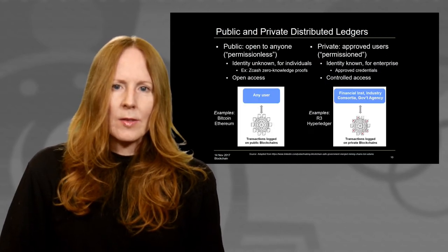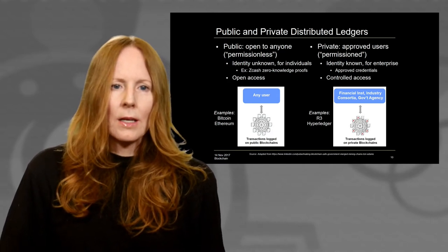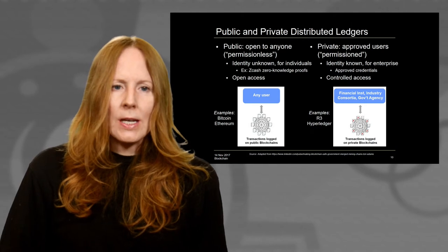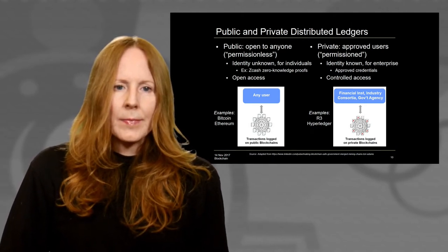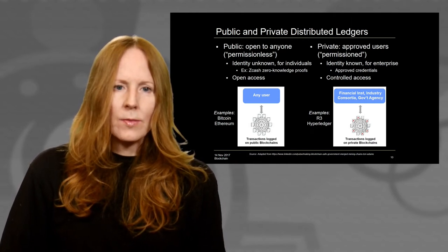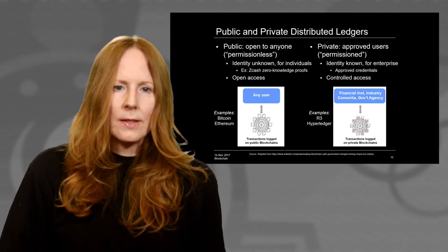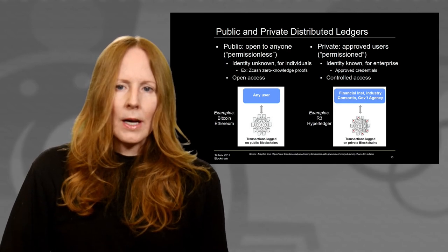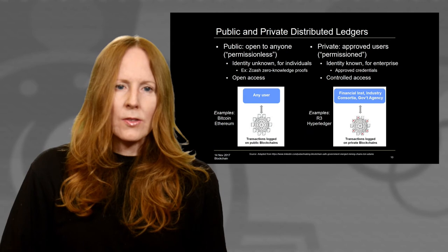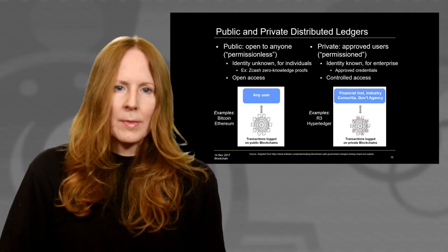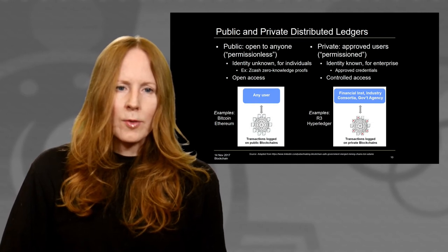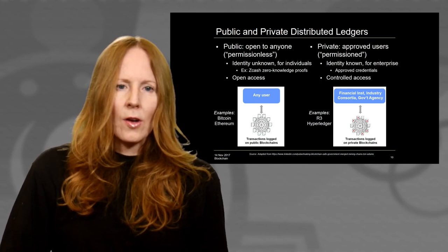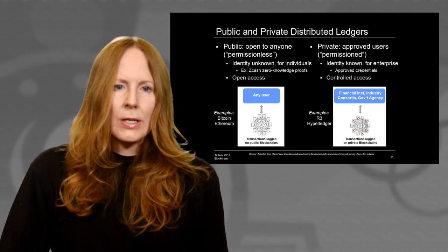There are two kinds of distributed ledgers: public and private. Public chains, like Bitcoin and Ethereum, are truly open public chains where identity is not known. Many users are preferring even higher grades of privacy, such as Zcash and Monero, and Ethereum has announced it will include zero-knowledge proofs to make its chain even more private. The other kind — enterprise or private chains — are like a corporate VPN, where only permissioned, credentialed users can perform certain operations. Examples include R3 Corda and IBM Hyperledger Fabric, where users are known and credentialed.